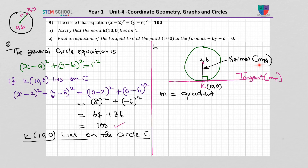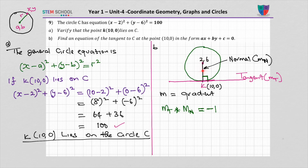Each line has its own gradient. The gradient of the normal is called mn, and the gradient of the tangent is called mt. The relationship between them is: gradient of the tangent times gradient of the normal equals minus 1. To find the equation of the tangent, we know the two points joining the normal — the center and point K — so we can find the gradient of the normal, then the gradient of the tangent, and with the coordinate find the equation of the tangent.